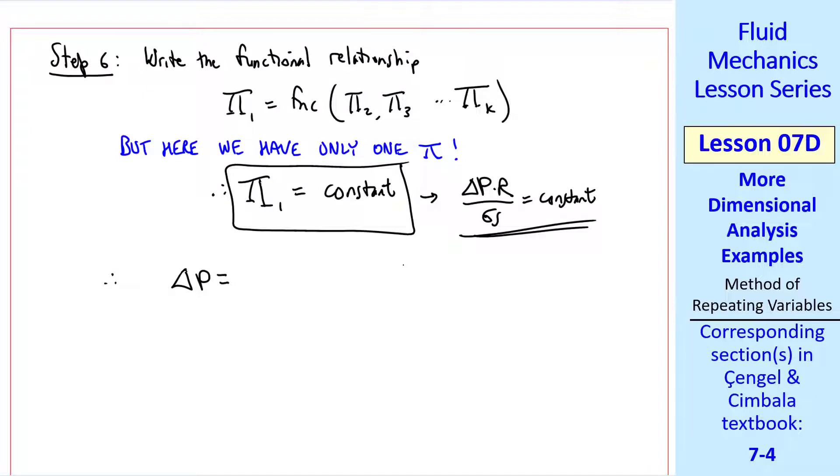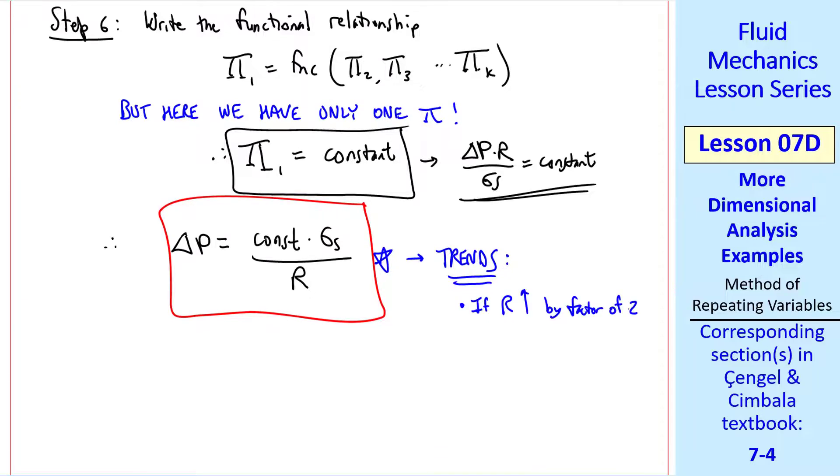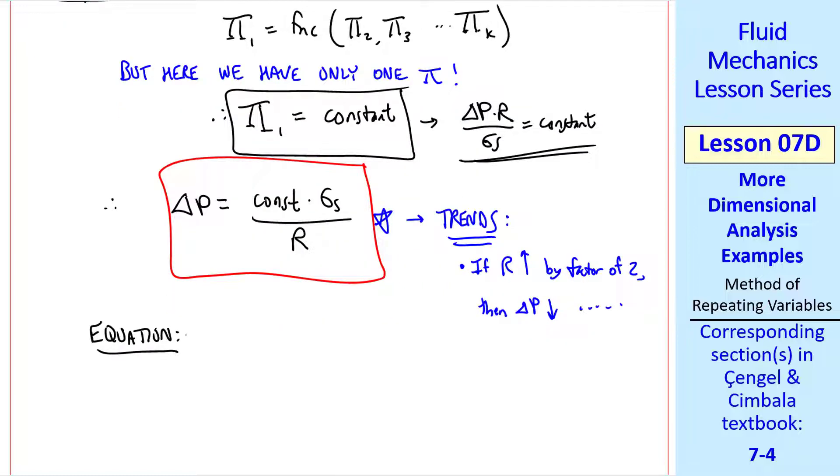Now we answer the question, how does delta p vary with r and sigma s? The answer is delta p is a constant times sigma s over r. Thus we can predict trends by dimensional analysis. For example, if radius goes up by a factor of 2, then delta p goes down by a factor of 2. That's true regardless of the constant. Likewise, if surface tension goes up by a factor of 2, delta p goes up by a factor of 2.